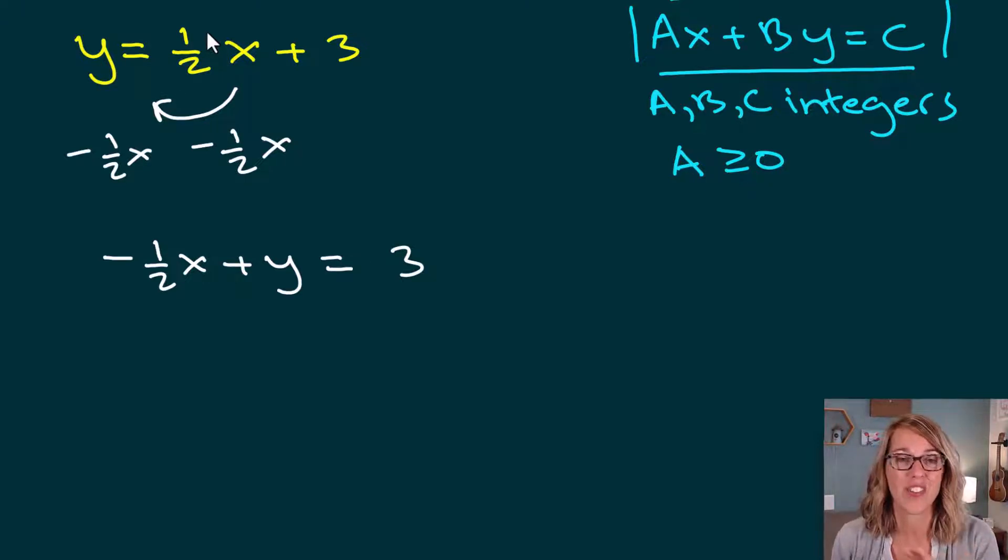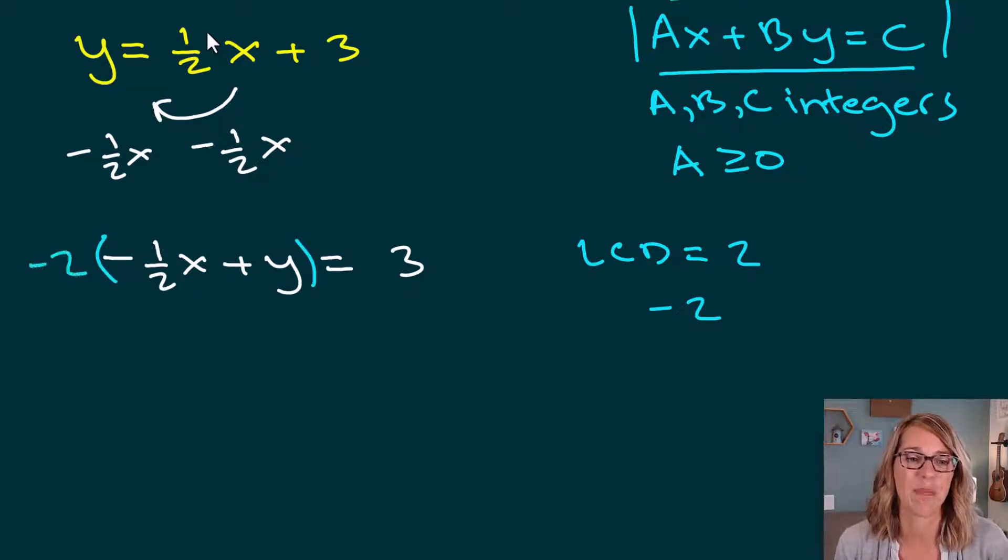Now I'm almost there, but I need integer coefficients, no fractions. And I also want that lead coefficient to be a positive. So to clear denominators, I would need that common denominator. There's only one of them, which would be a 2. But I also want to get rid of that negative sign. So I'm going to multiply everybody by a negative 2. So everybody on the left is going to get multiplied by negative 2. And the 3 on the other side is going to get multiplied by a negative 2.